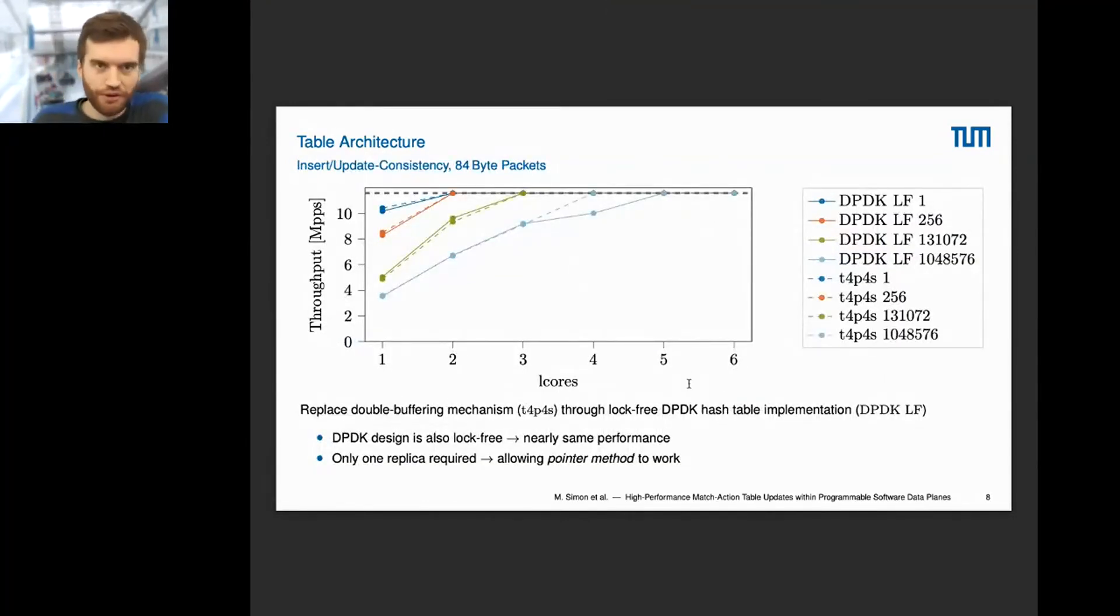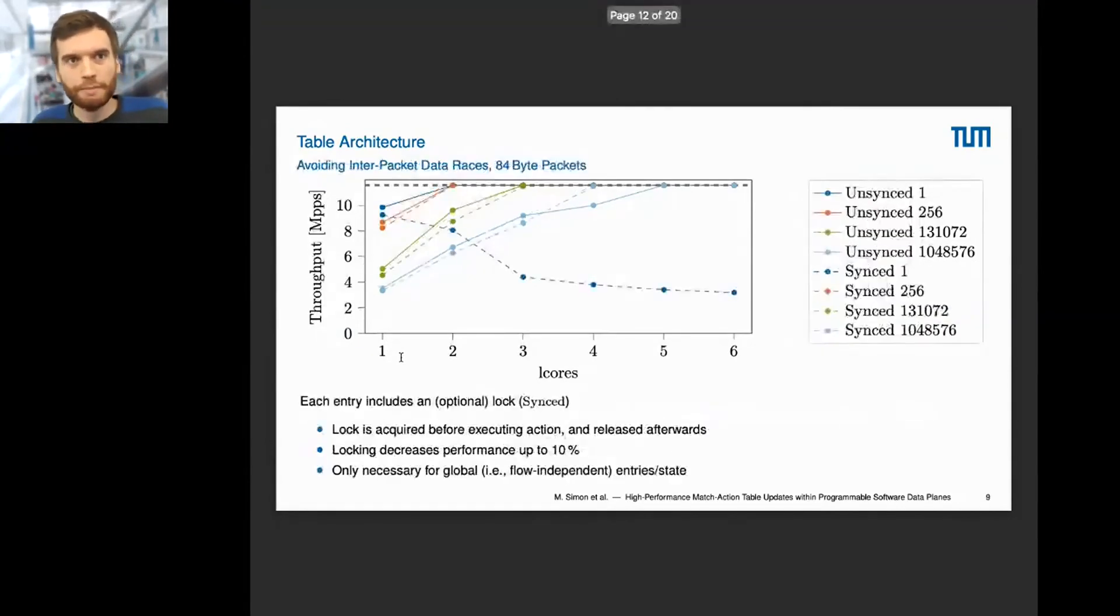Now let's come to our evaluation. For the insert-update consistency, we replaced the old TAPAS double buffering mechanism with the DPDK one. We can see for different table sizes, for small table sizes the throughput is only a little bit less than the original, and for higher table sizes it's even better or nearly the same. They both scale up with the number of cores used. The performance overhead is really small, it's nearly the same performance. But since only one replica is required, we can now change entries using the pointer method, which was the most performant one.